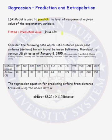Remember, the fitted or predicted value, y-hat, is equal to a plus bx, where a and b are regression coefficients. If we want to predict the response at a given level of our explanatory variable, we plug that level into our equation for x and find what the predicted value is.